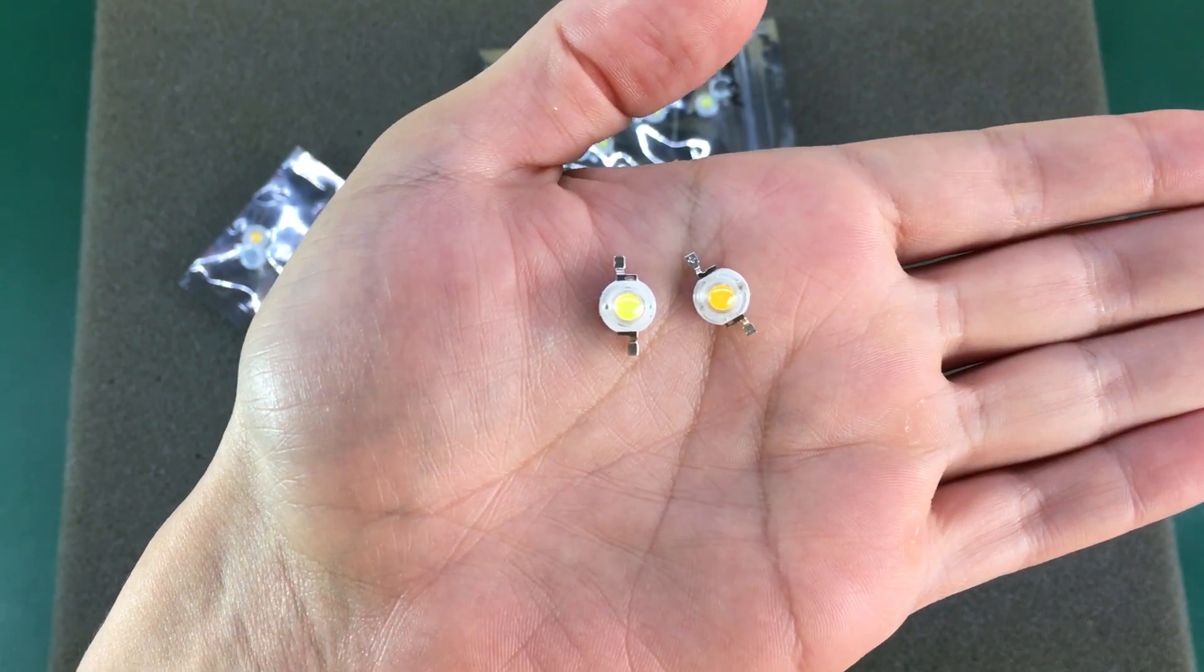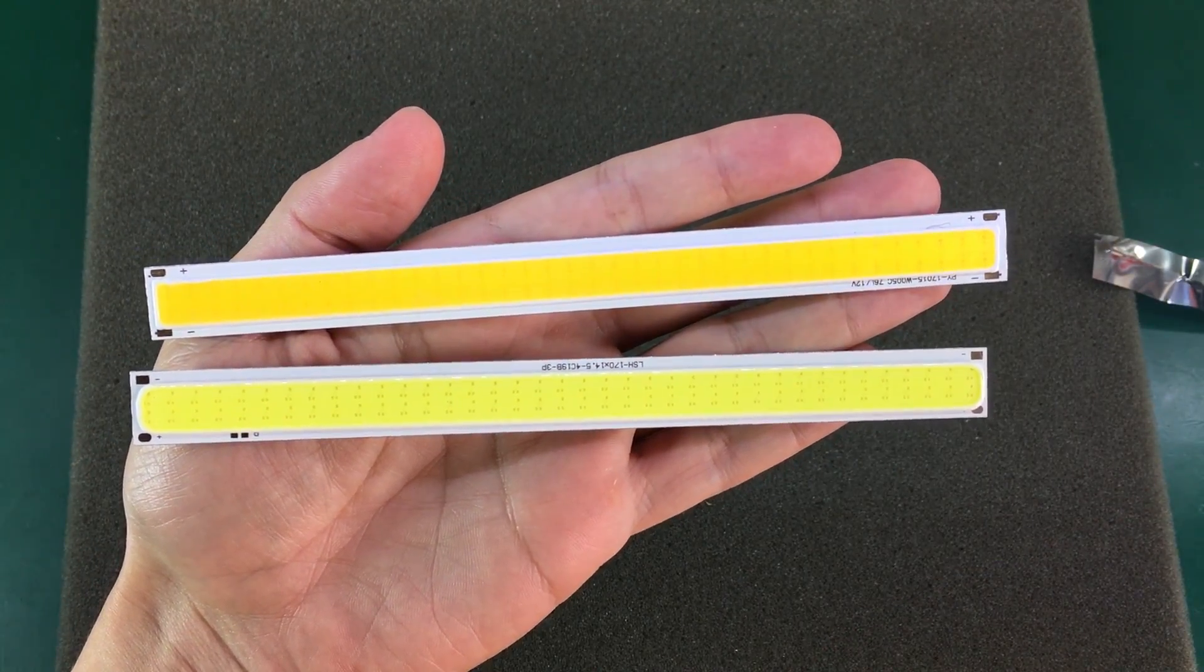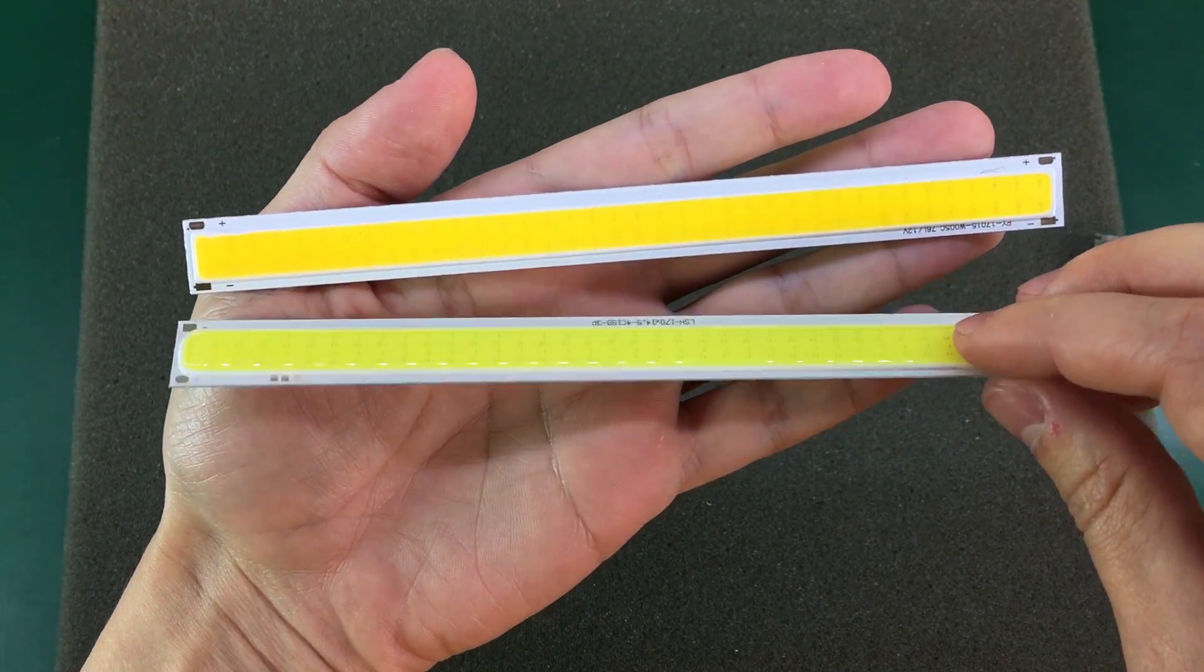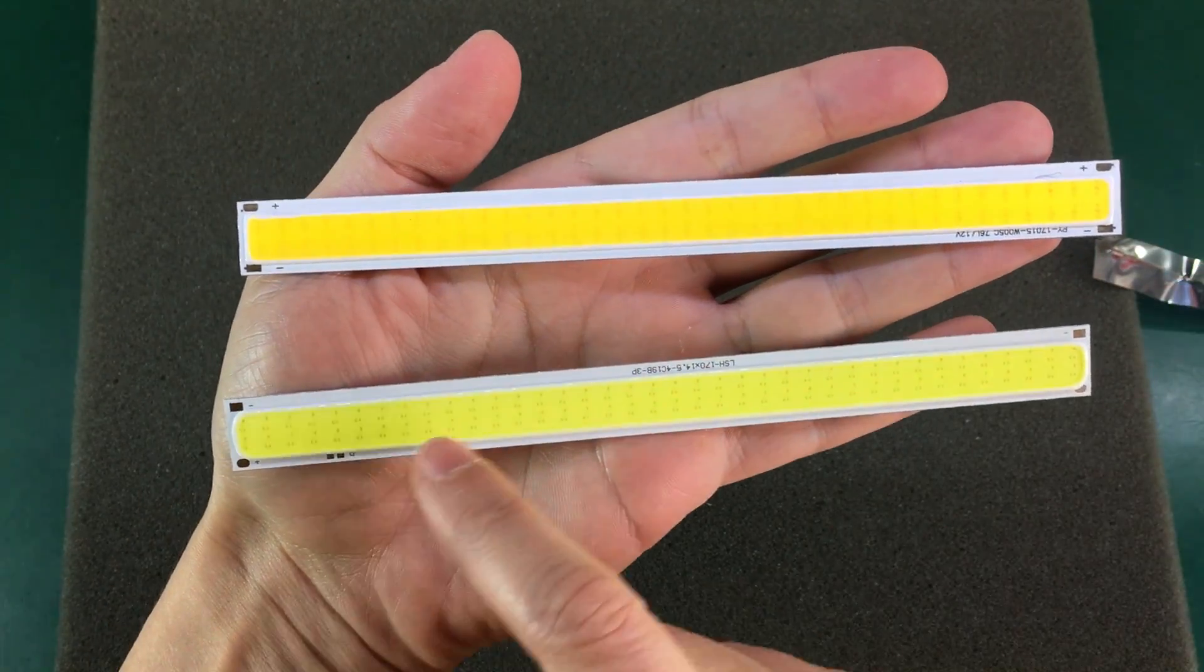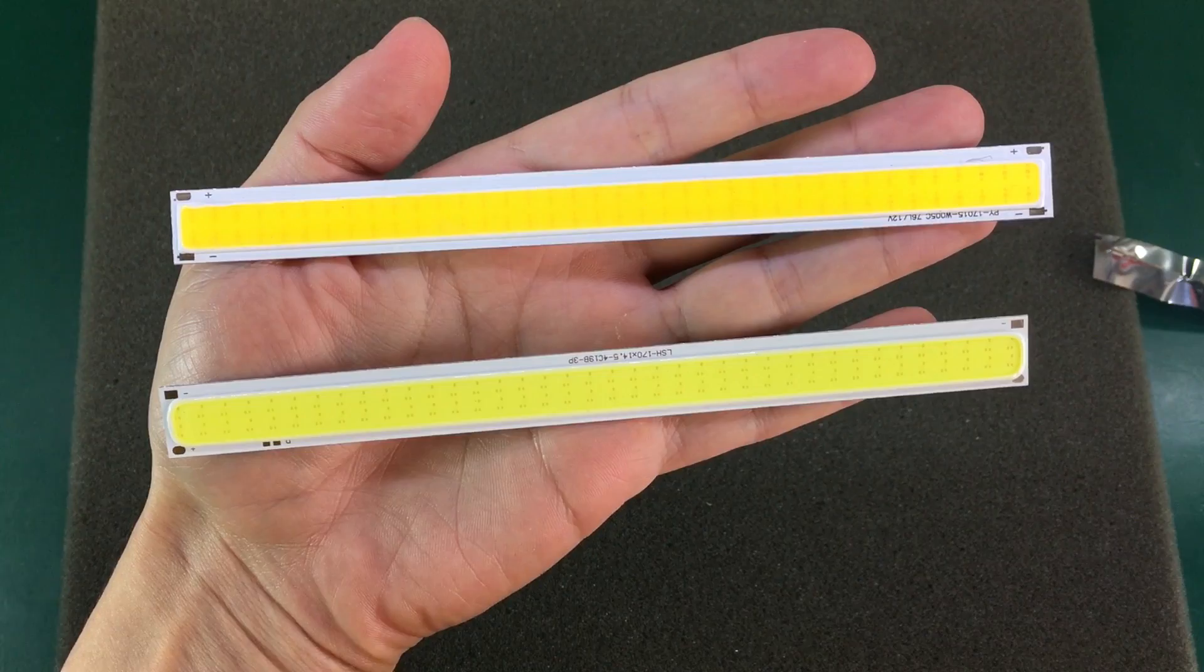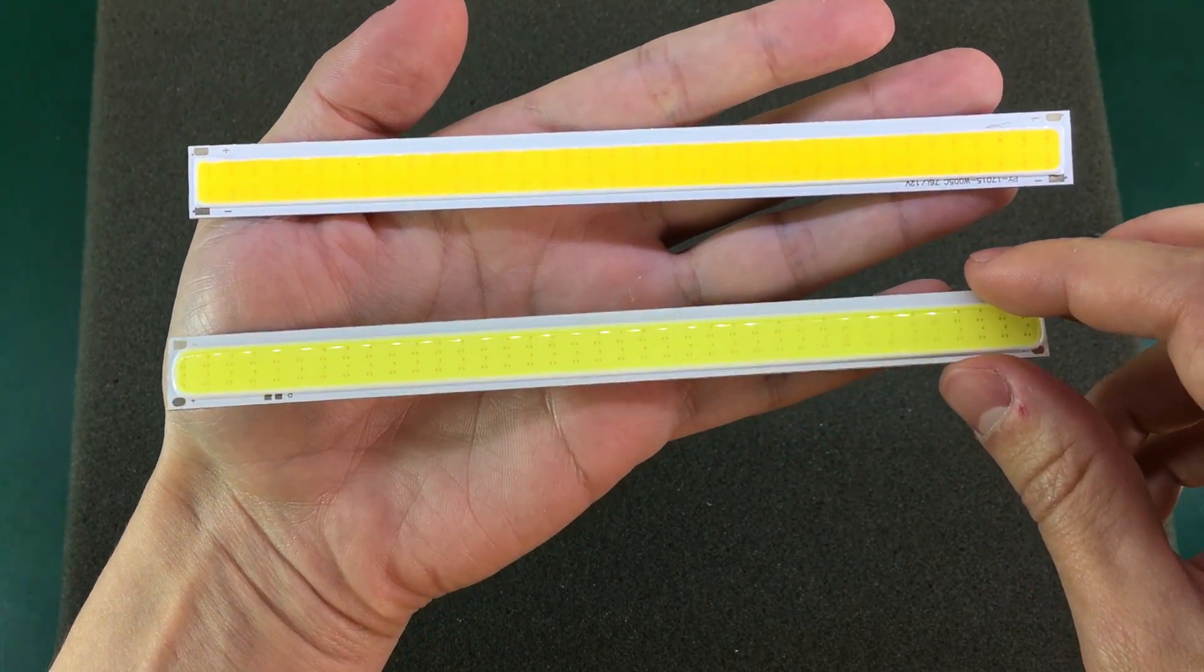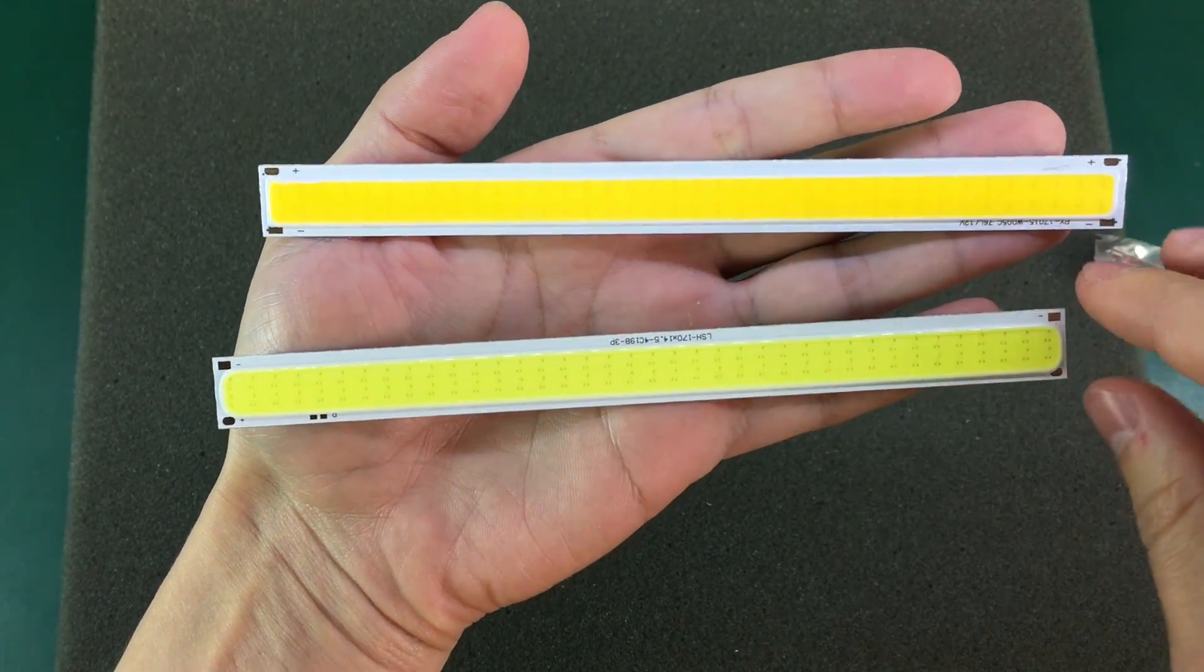I also purchased a couple of these chip on board LEDs from Banggood. I find these interesting, they are 6 watts and they should contain 76 LEDs on this module. The forward current is 520 milliamps at 12 volts and they should output 760 lumens according to their product description.